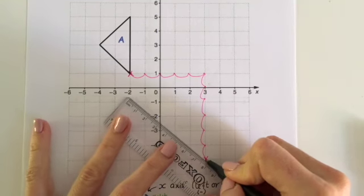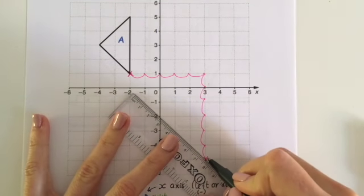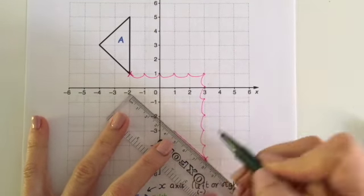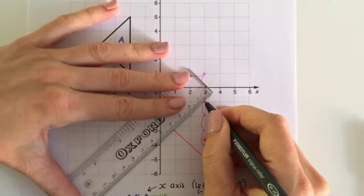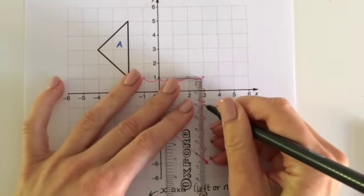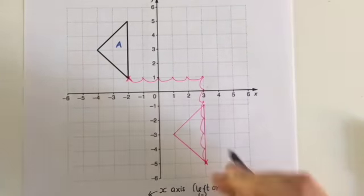Remember, you could use tracing paper if it's easier. So like that, and then like that, and then they join this way.